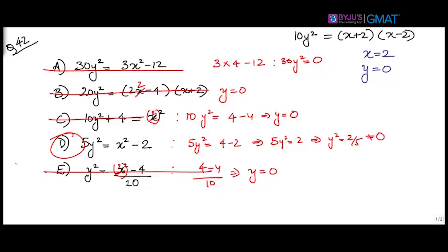What are you left with? Option D. Option D is the algebraic expression not equivalent to the given expression. For equivalence questions: take values, whichever satisfies throw it out if the question asks 'not equivalent,' and keep the option that is equivalent if the question asks for equivalency. I hope that helps.